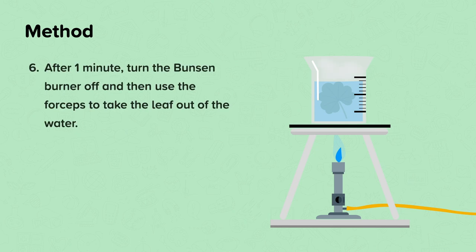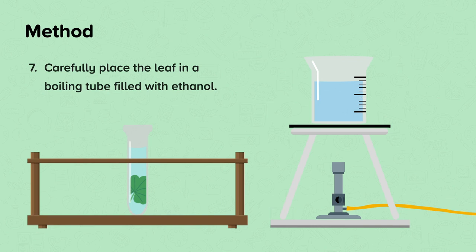Step six, after one minute turn the Bunsen burner off and then use the forceps to take the leaf out of the water. Step seven, carefully place the leaf in a boiling tube filled with ethanol. Remember, ethanol is extremely flammable and can easily set alight if brought near to a flame, therefore it is essential that the Bunsen burner is turned off when carrying out this step.